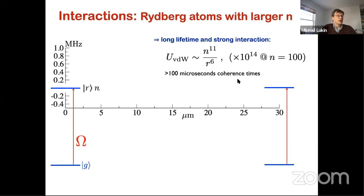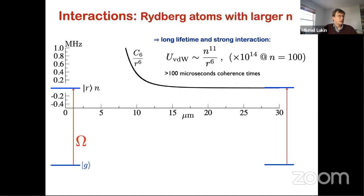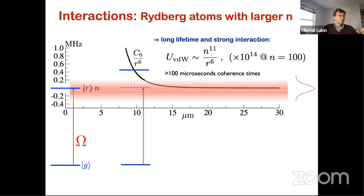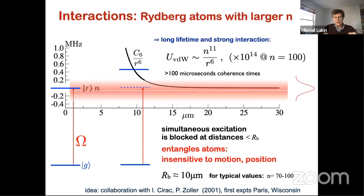One approach we use is the idea of Rydberg blockade, which we developed with Ignacio and Peter almost 20 years ago. If you take two atoms and try to excite them resonantly into a Rydberg state: when they are far away, they undergo individual Rabi oscillations. But when brought close, the strong interaction takes over, and within the Rydberg blockade radius you cannot excite both simultaneously — you can excite one or the other, but never both at once. This gives rise to the Rydberg blockade effect, which is insensitive to atomic position and motion, making it a very effective mechanism to entangle atoms.